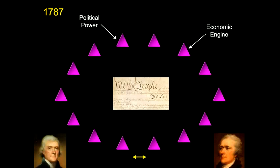Jefferson represented what I'll call horizontal forces. He was from rural, agrarian interests and wanted to keep power distributed so that horizontal relationships between people and local community would be the basis for bottom-up power in the Republic. Hamilton represented vertical forces. He was connected with wealthy urban interests and wanted power and wealth to be able to consolidate vertically to drive economic growth.